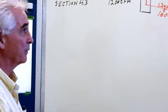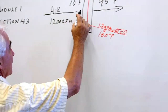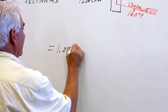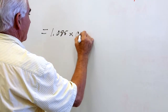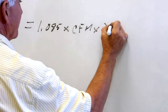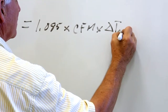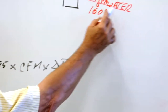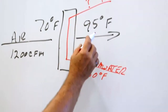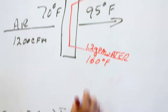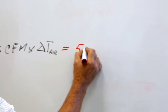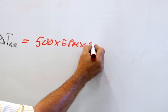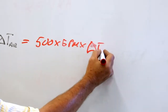We have two equations that we use. One equation is: BTUs per hour gained by the air equals 1.085 times the CFM times the difference in temperature of the air. And we have another one that relates to the amount of energy given up by the water to the air, which equals 500 times GPM times the delta T of the water.